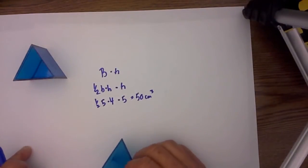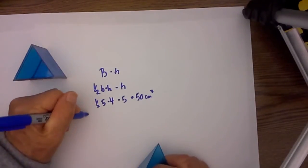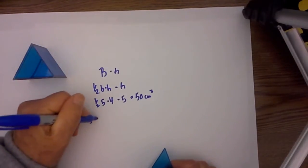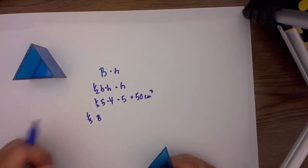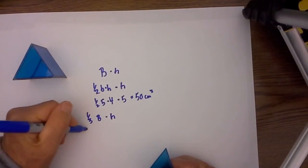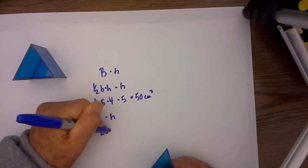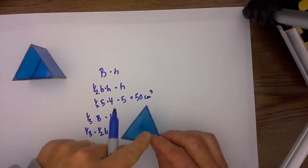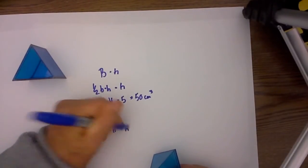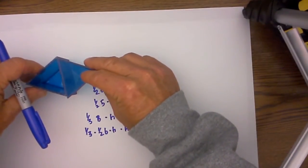Therefore, the formula for the triangular pyramid would be one third times the base area of the pyramid times its height. This works out to be one third times one half the base of the pyramid times the height of this triangle base times the height of the pyramid. You can tell by setting them beside each other that they are the same height.